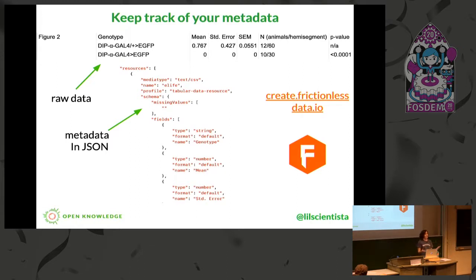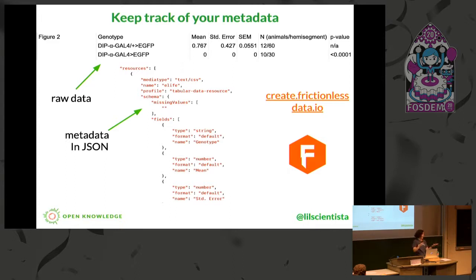The frictionless data tools can be used to keep track of your metadata — it's data about your data. Things like what's the license and what are the column names. Using the frictionless data tooling, such as this browser tool here, you can take raw data and insert it, and the tool will automatically create metadata for you that you can go in and edit. The metadata is in JSON, so it's machine readable and interoperable. It's important to keep track of your metadata so that you know what is in your data — future you knows that, and anyone else that wants to use your data can know that as well.